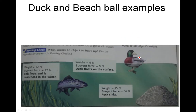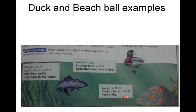Now let's look at the rock, the fish, and the duck. For the rock: buoyant force is 50 newtons up, weight is 75 newtons down — net force 25 newtons down, the rock sinks. Easy — it weighs more than the buoyant force. For the fish: buoyant force is 12 newtons up, the fish weighs 12 newtons down — they balance, so the fish swims and is suspended.